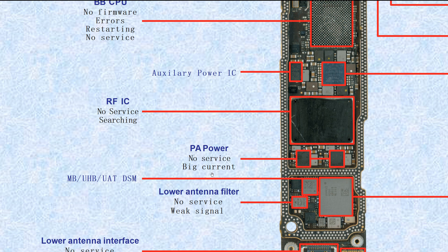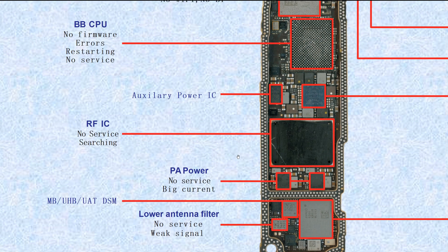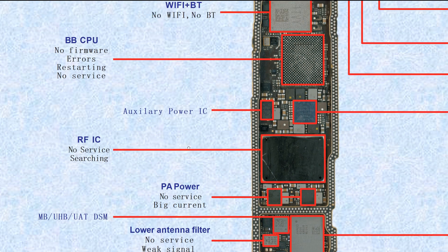These two are PA — power amplifiers. If broken, they cause no service or high current. This one is the RF IC — RF IC means transceiver, receiver and transmitter. If broken, it causes no service or searching.